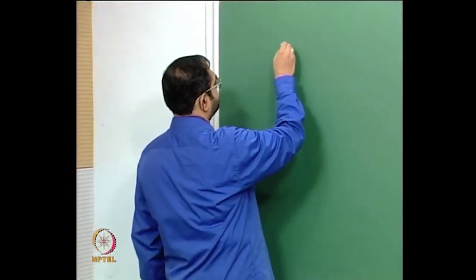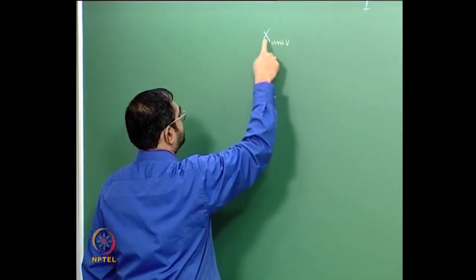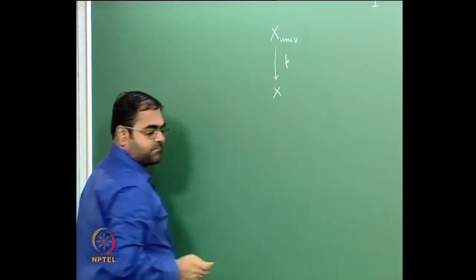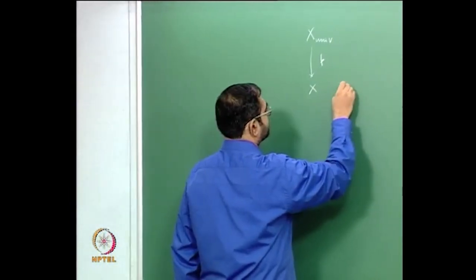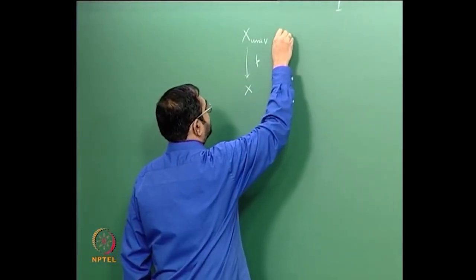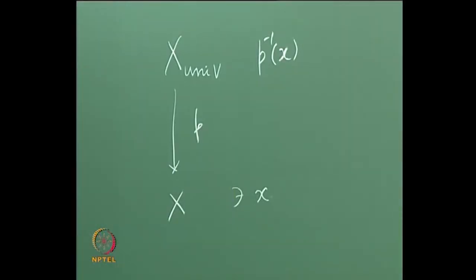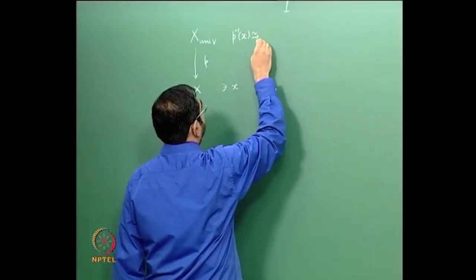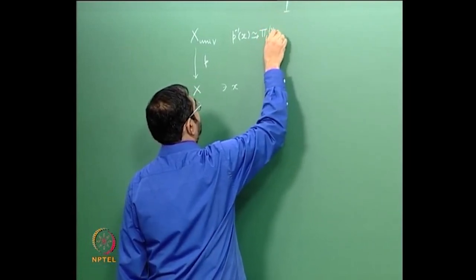So we got a picture like this: if X_univ is the universal cover for the topological space X, then given a point x in X, the fiber p⁻¹(x) — namely the set of all points mapped to x under p — is canonically, which means naturally, bijective to the fundamental group of X based at x.